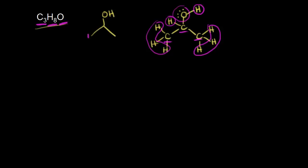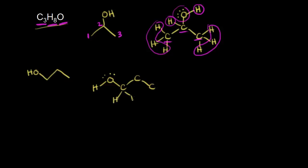If I numbered this — carbon one, carbon two, carbon three — that helps us draw the next structural isomer. Instead of the OH group coming off of carbon two, what if it came off of carbon one? Let's draw out our three carbons and put the OH group coming off of carbon one. Let's expand this out and draw the Lewis dot structure to verify the molecular formula.